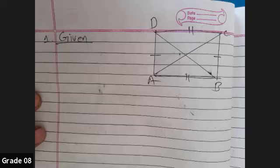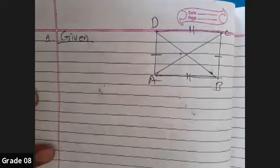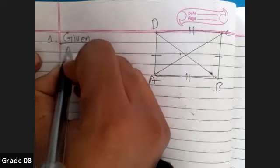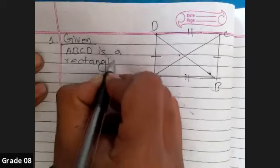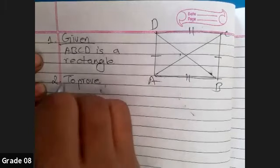In the adjoining figure, ABCD is a rectangle. After that, they have started to prove. In the given, you can simply write ABCD is a rectangle. So this is just a given part. To prove is we have to prove two triangles.